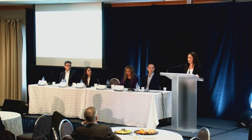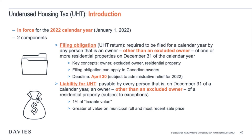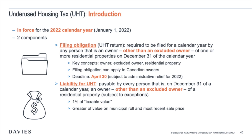If you think you might be late filing, don't worry — there has been transitional administrative relief granted by the CRA, so you're okay if you file and pay the tax by October 31st of this year. There are two components: the first is the filing obligation — a UHT return must be filed by every person who is an owner other than an excluded owner of a residential property on December 31st of the calendar year, with a deadline of April 30th of the following year.